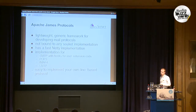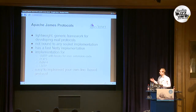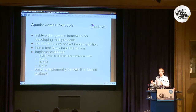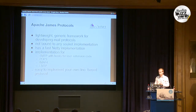Next is Apache James Protocols — a lightweight generic framework for developing line-based protocols. Most protocols like SMTP and IMAP are line-based: the client sends a line asking the server for some information, and the server responds with one or several lines. So if you want to develop protocols that fit this model, try it out.